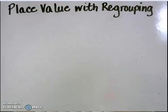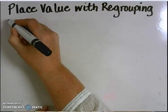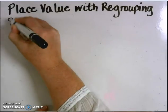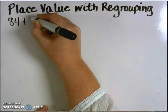In this session, we will use the operation of addition, including two-digit numbers. The numbers are 84 and 47. I'll write the equation at the top. Eighty-four plus 47.